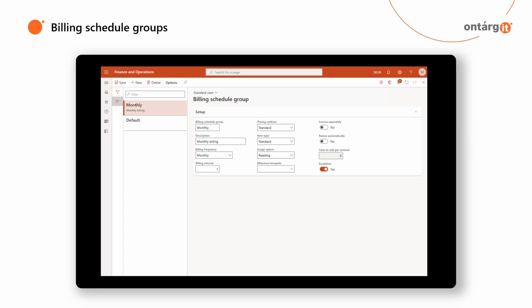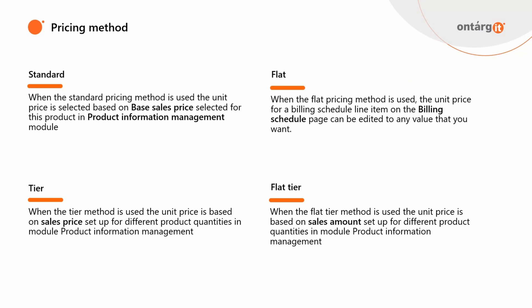You can define allocation percentage or fixed amount for each milestone. Also here you set up your pricing method. The pricing method defines how the unit price for the items in the order is calculated. There are 4 options available.